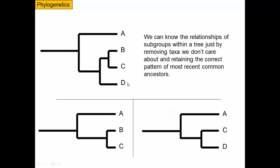If we have a tree with a set of taxa, we can determine the relationships of subsets by simply removing the taxa we don't care about and retaining the pattern. If we only care about A, B, and C, we don't need to include D. If we only care about A, C, and D, we don't include B. The reduced phylogeny shows the same relationships without any kink or distortion — C and D remain related in the same way as in the full tree.